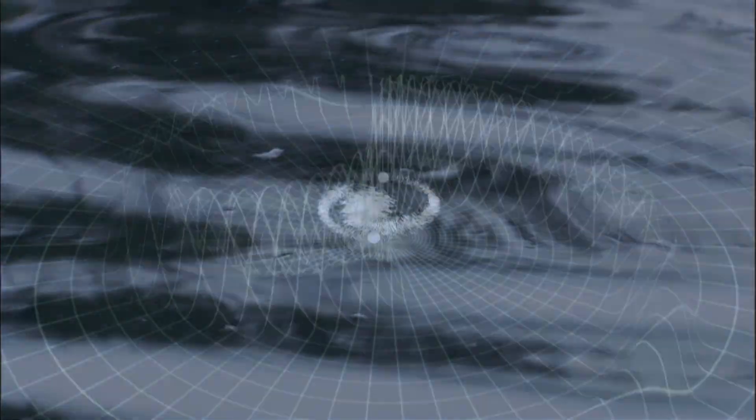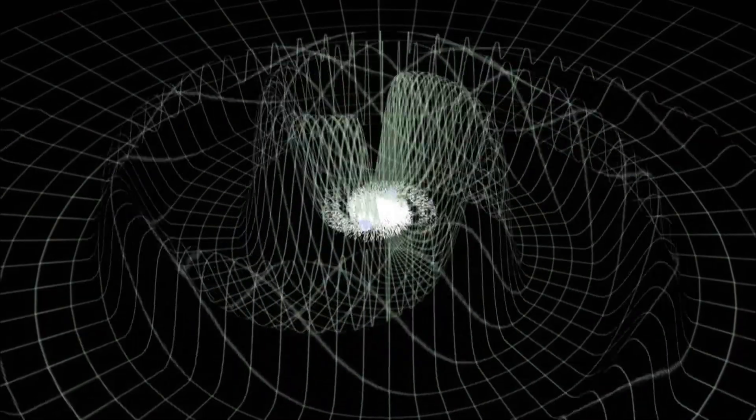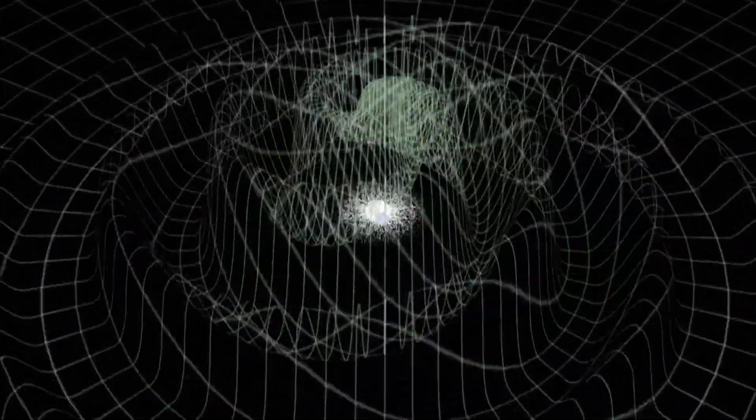It's like a rock hitting a pond. Some of the energy of the impact is transferred to waves that move outward along the surface. Likewise, a titanic collision of black holes would send waves, gravity waves, racing across the universe.